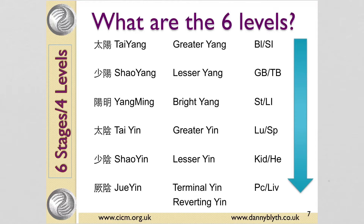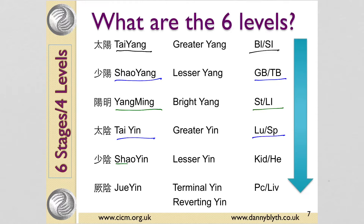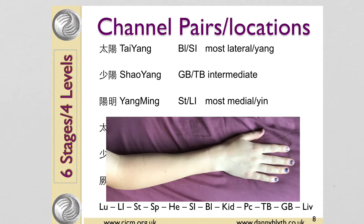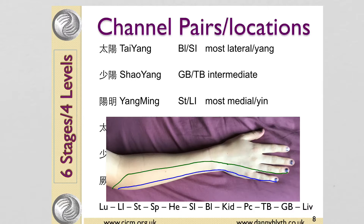So the six levels are the six pairs of channels. The Tai Yang is the bladder and small intestine. The Shao Yang is the gallbladder and triple burner. The Yang Ming is the stomach and large intestine. The Tai Yin is the lung and spleen. The Shao Yin is the kidney and heart. And finally, the Jue Yin is the pericardium and liver. If you think about where these channels are, the bladder and small intestine are the most lateral, most Yang on the outside. The gallbladder and triple burner is the intermediate. And the stomach and large intestine is the most medial and the most yin of the yang.